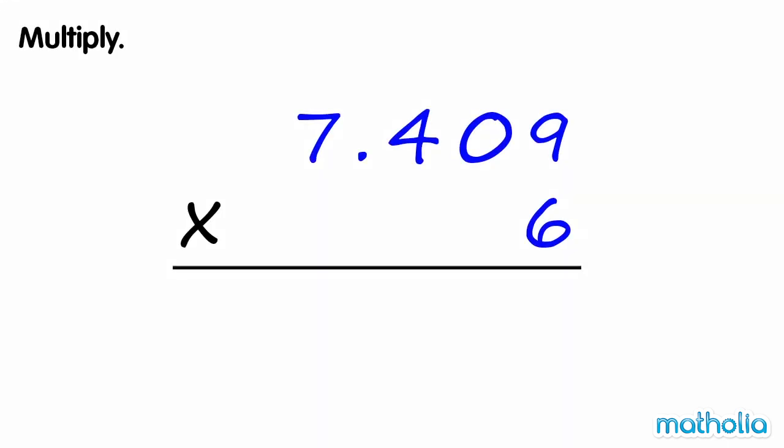Multiply. Find 7.409 times 6. Multiply the thousandths. 6 times 9 thousandths equals 54 thousandths. Regroup 54 thousandths into 4 thousandths and 5 hundredths.